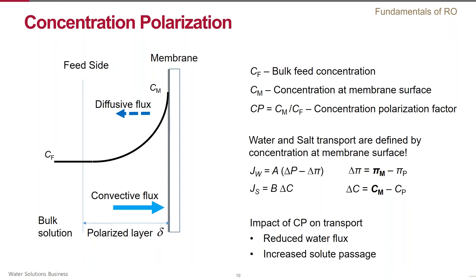The highest salt concentration Cm occurs at the surface of the membrane. Concentration polarization has a negative effect on RO membrane performance: it increases the osmotic pressure delta pi m within the boundary layer, effectively reducing the driving force for water through the membrane. Secondly, the higher concentration of solutes on the membrane surface Cm compared to the bulk leads to higher passage of solutes.